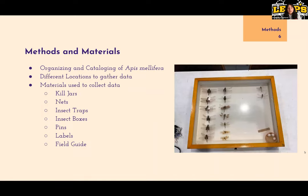Methods and materials. This research consists of organizing and cataloging of Apis mellifera. The different locations to gather data will be Laredo College. However, if Laredo College is not open in the fall, then the data will be gathered in public or private areas such as parks or back and front yards. The materials used to collect data are kill jars, nets, insect traps, insect boxes, pins, labels, and field guides. The photo on the right is an example of the way insects are labeled and pinned in boxes.